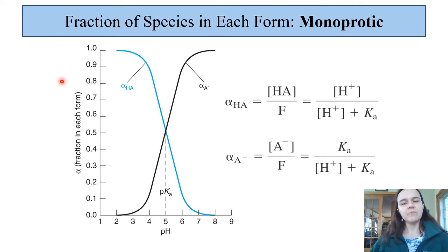Continuing with monoprotic acids and bases, there are more detailed formulas about what percentage of the species is in each form. When you look at the pH on the x-axis versus alpha, which is the fraction in each form, we see that at lower pHs, we have essentially 100% of HA.